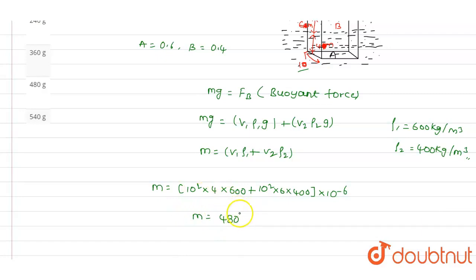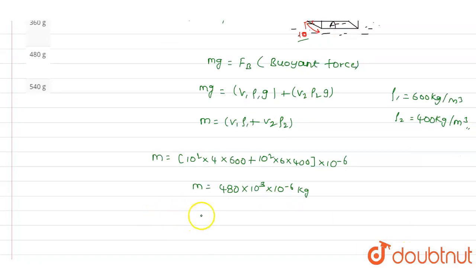We will get 480×10³×10^-6 kg, and m value will be equals to 480 grams.